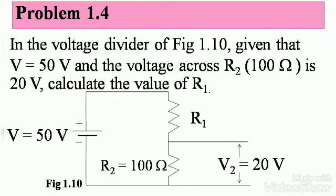Problem 1.4. In the voltage divider of figure 1.10, given that V equals 50 volts and the voltage across R2, which is 100 ohms, is 20 volts, calculate the value of R1. Note down the figure: V is 50 volts, R1 we have to find, R2 is 100 ohms and V2 is 20 volts.